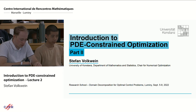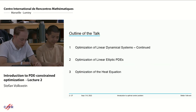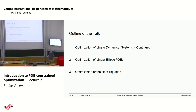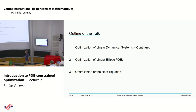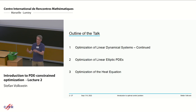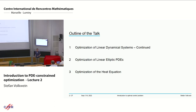Today we continue from yesterday the linear dynamical system stuff. I had the good situation that I can use things from Felix's lecture because he handled this linear dynamical system. We have a look at the optimality system, then we turn to linear elliptic PDEs where functional analysis comes into play. The combination of one and two is then the heat equation.